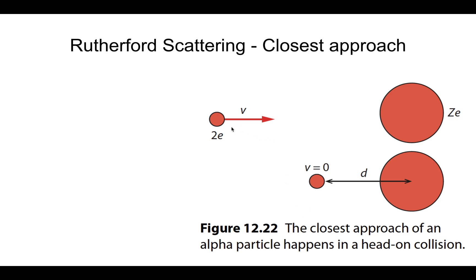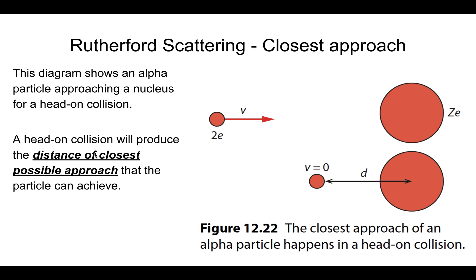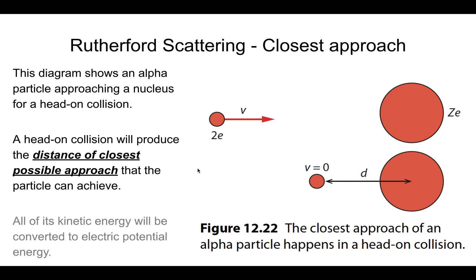Here we have a diagram showing an alpha particle approaching a nucleus. Z is the proton number of this nucleus, and E is the fundamental charge. What we have here is a head-on collision where our alpha particle is headed toward the exact center of this nucleus. This is going to produce the closest possible distance that this alpha particle can achieve in relation to the larger nucleus — that's what we mean by distance of closest possible approach. What happens here is that the alpha particle's kinetic energy is converted to electric potential energy.